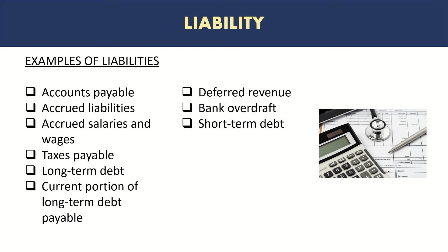Similarly, any taxes payable to authorities are a liability. Long-term debt and long-term loans that the company holds are also liabilities. Additionally, the current portion of long-term debt — the amount that must be paid within the next 12 months based on the loan payment schedule — is considered a current liability.